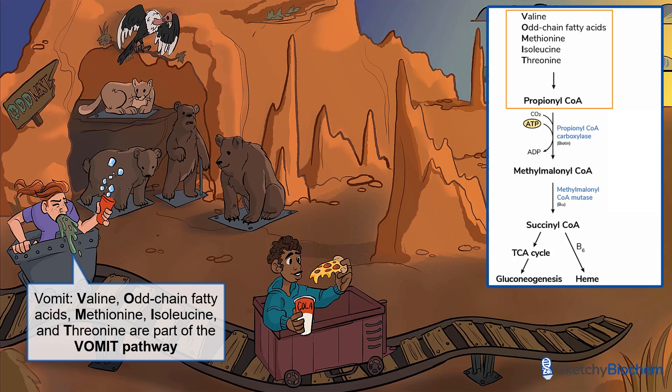As shown in our diagram, these precursors undergo a series of biochemical reactions to eventually make succinyl-CoA. Let's start with the odd chain fatty acids, represented by the Odd West sign. Odd chain fatty acids undergo beta-oxidation just like the even chain fats, except they make 3-carbon propionyl-CoA during the last round. Similarly, the amino acids valine, methionine, isoleucine, and threonine are also metabolized to propionyl-CoA.